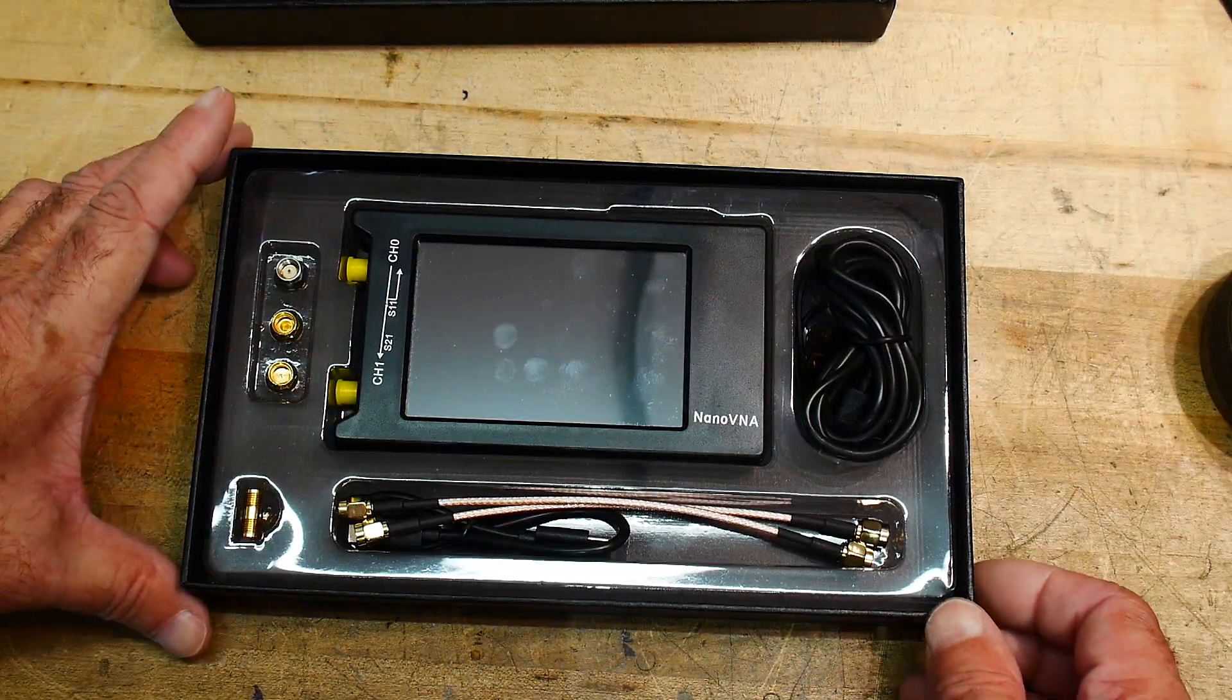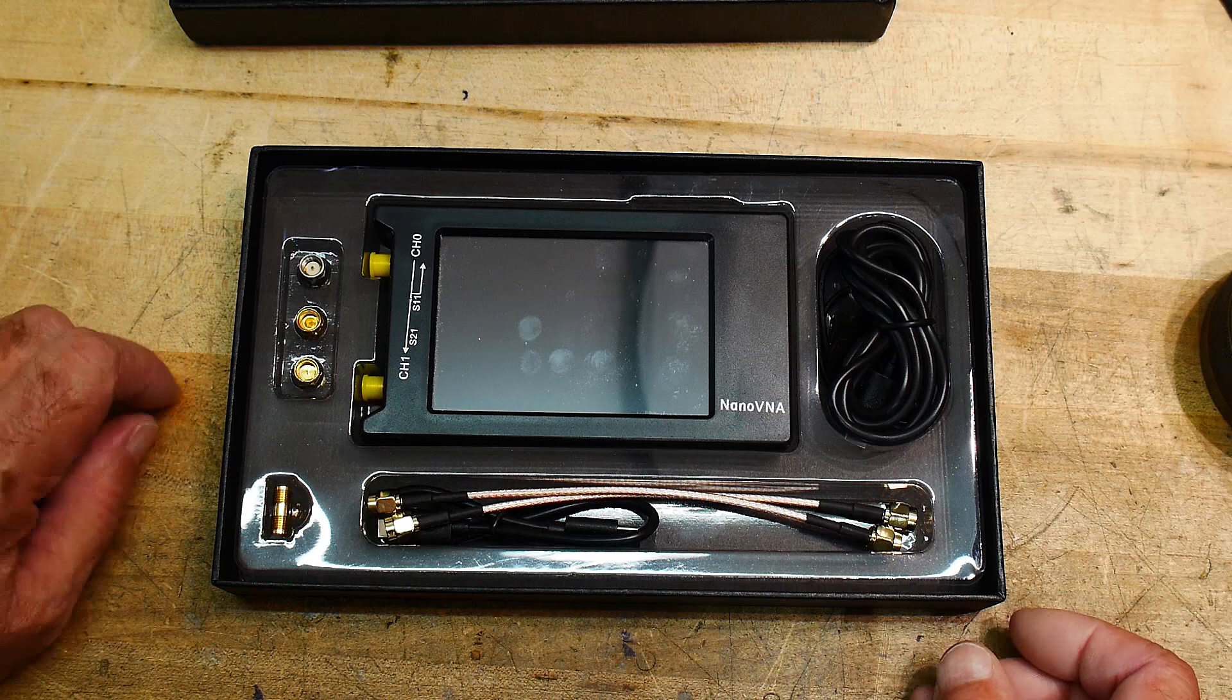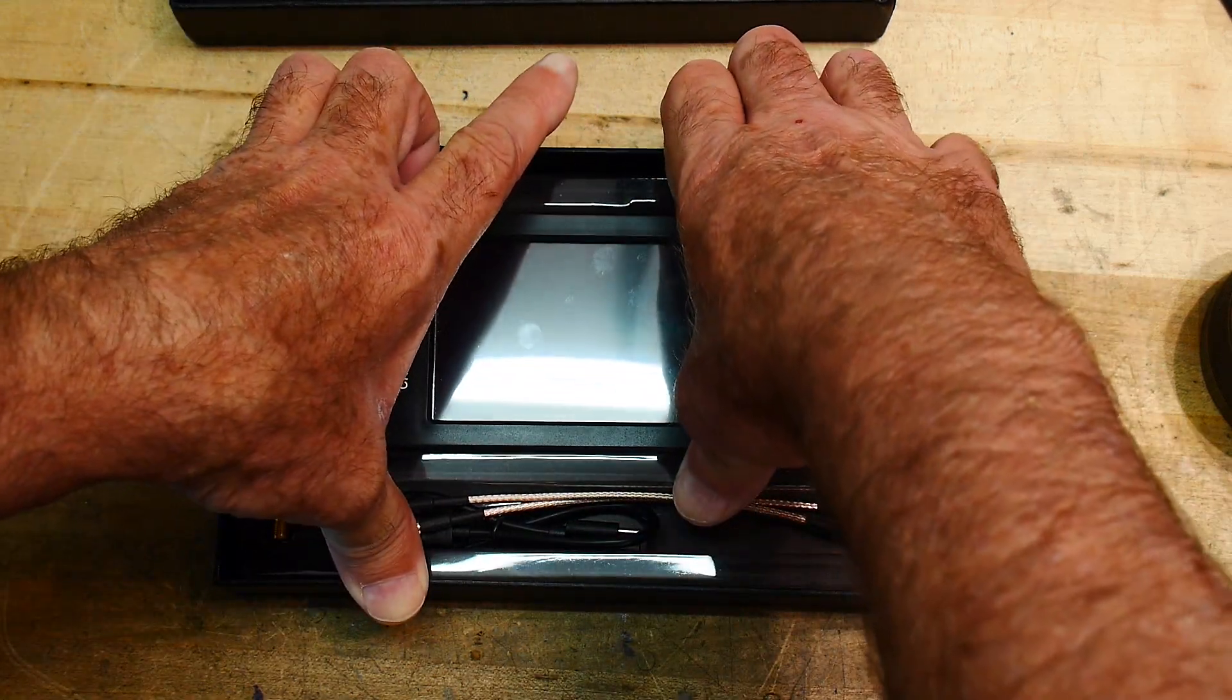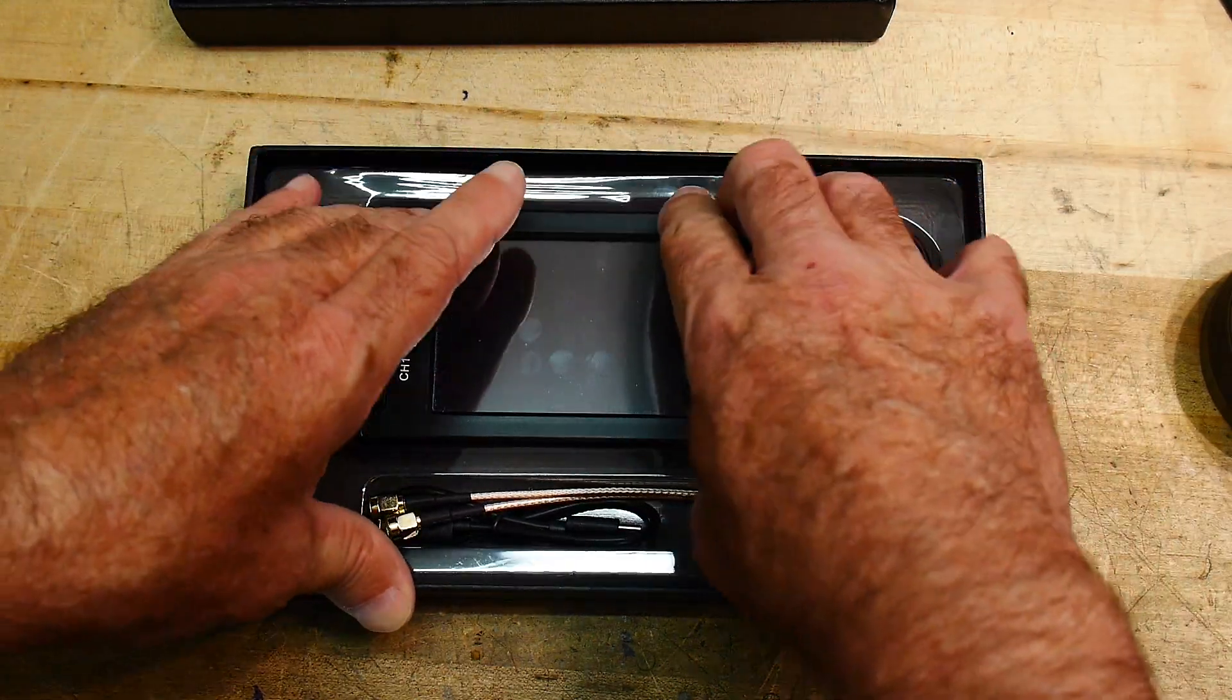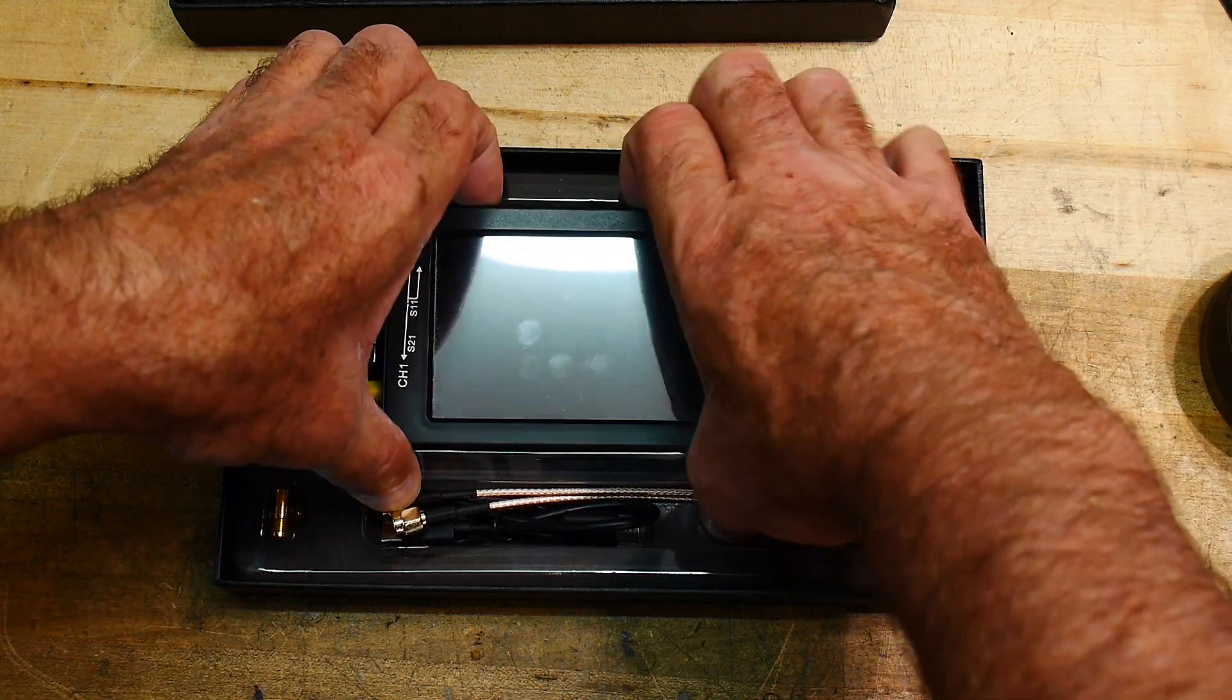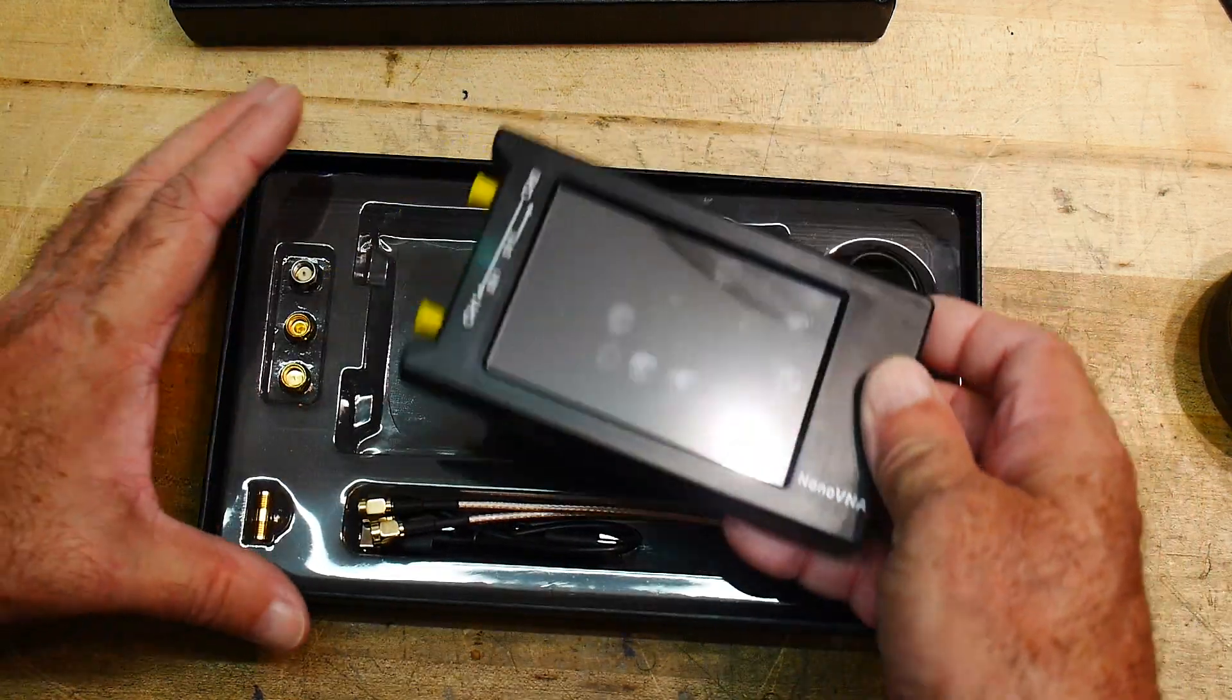Okay, so what do you get in the box? You get the Nano VNA. Now I have removed it and played with it, so it had a screen protector that I peeled off, so that's the only difference. But this is how you'll get it.